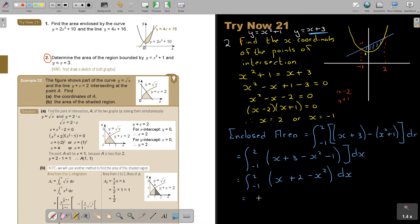Now, I'm going to integrate. So, this is going to be X squared over 2 plus 2X minus X cubed over 3. And my boundaries is 2 and negative 1.